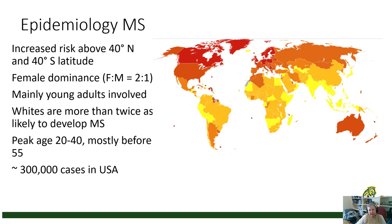We don't entirely understand what causes MS. We do know it is more common at higher latitudes — people living further north in the northern hemisphere and further south in the southern hemisphere are more likely to have MS. It usually presents in young adulthood, occasionally in adolescence, and is more common in women than in men — about a two-to-one preponderance. Symptoms most commonly start in the 20s and 30s, almost always before age 60, and there are about 300,000 cases in the United States.